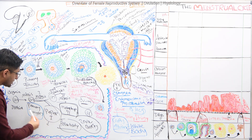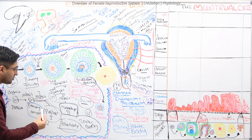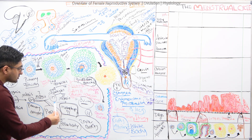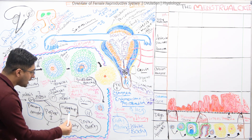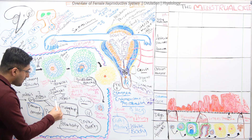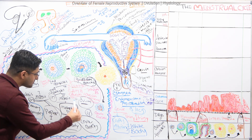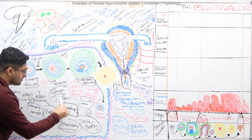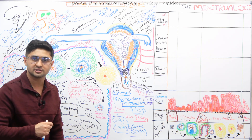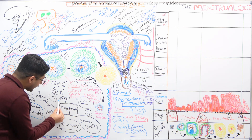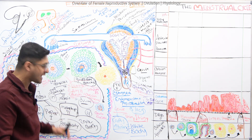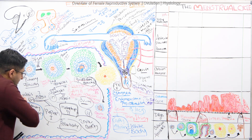At puberty, the primary oocyte completes its cycle and becomes a secondary oocyte plus a polar body. This secondary oocyte also starts meiosis II but gets arrested at metaphase II. It will not complete meiosis II if fertilization does not occur. So after puberty, the secondary oocyte remains arrested at metaphase II until fertilization.